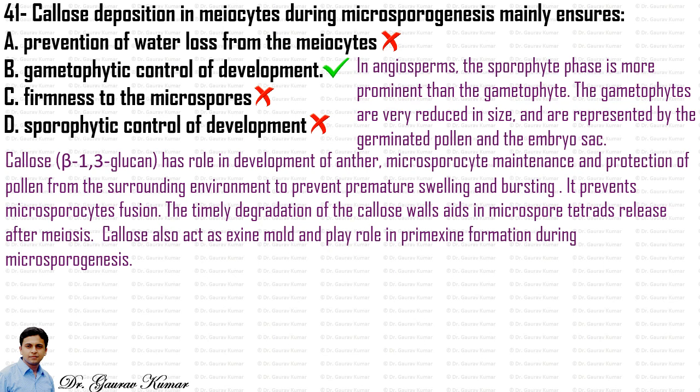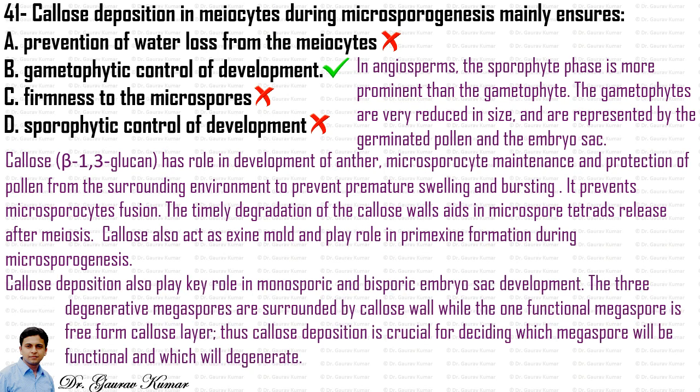The role of callose in megasporogenesis is also noteworthy. Callose deposition plays a key role in monosporic and bisporic embryo sac development. The three degenerative megaspores are surrounded by a callose wall, while the one functional megaspore is free from the callose layer. Thus callose deposition is crucial for deciding which megaspore will be functional and which will degenerate, and degeneration of megaspores occurs through programmed cell death.